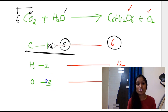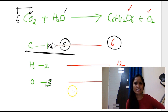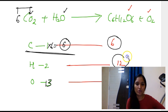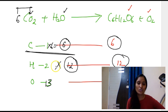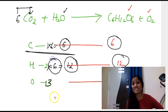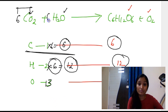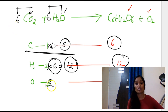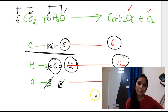So now we have 12 oxygens from 6CO2, and the running count updates. Next balance hydrogens: 2 on the left and 12 on the right. Multiply H2O by 6 so that 6 × 2 = 12, equalizing hydrogens. Place 6 before H2O on the left-hand side. Then check the oxygen count again — you now have 6 oxygens from 6H2O added to the running total, making the left-hand side oxygen count 18.